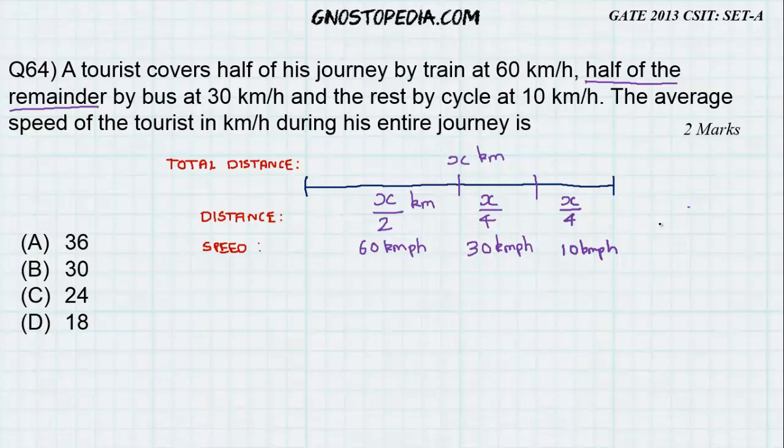Speed is equal to distance upon time and hence time is equal to distance upon speed. So calculating time we get...